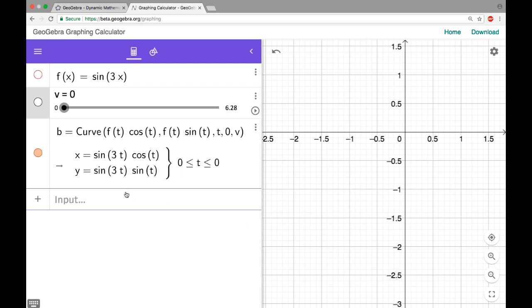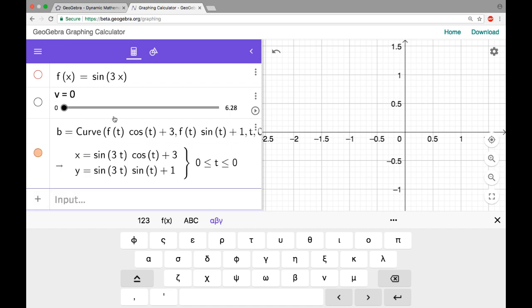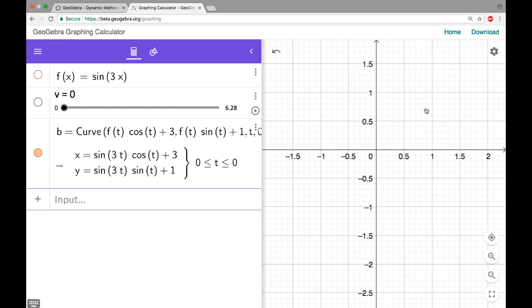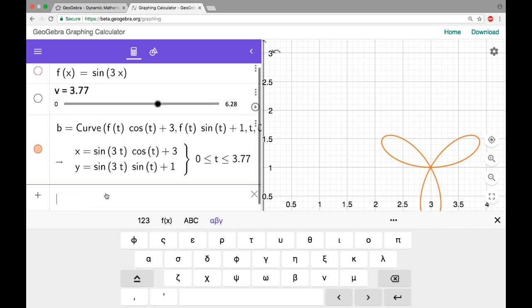Another thing you can do that I really like about this is if we double click in here, we can move things around. So I could say plus 3 and plus 1. So what's gonna happen now is when I graph this, it's a polar curve, but it's not at the origin anymore, which is one of the advantages of using the parametrics for this.